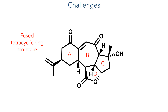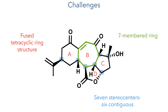While Scabralide A, which they previously synthesised, has a 7-6-5-5 ring structure, Scabralide B has a 6-7-5-5 ring structure, meaning that they would need to completely redesign their synthetic strategy. In particular, synthesising the central seven-membered ring is a significant challenge, complicated by the fact that it is part of a network of six contiguous stereocenters.